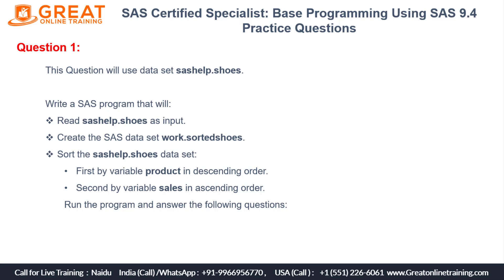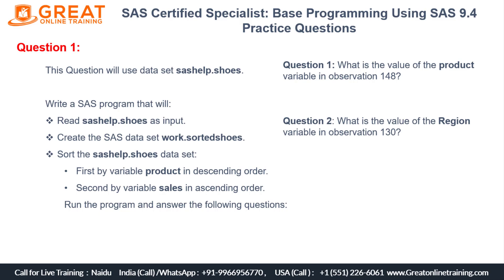You need to write a program to create a new data set called sorted_shoes, where the first BY variable is 'product' in descending order and the second BY variable is 'sales'. Based on this task, the exam asks two specific questions: first, what is the value of the 'product' variable at observation number 148? Second, what is the value of the 'region' variable at observation number 130?